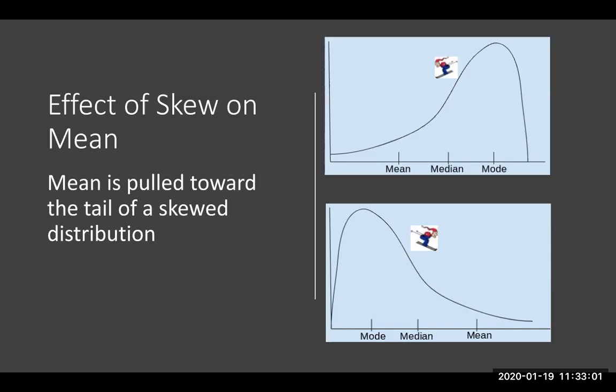I argue that if you have a skewed distribution, give your readers all three measures and let them decide. But if you can only pick one, the median would be the most appropriate measure of central tendency.